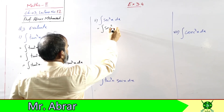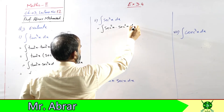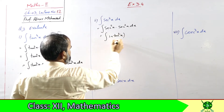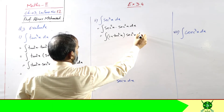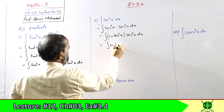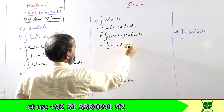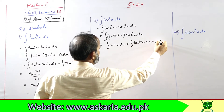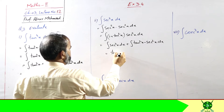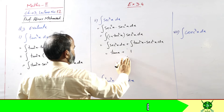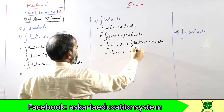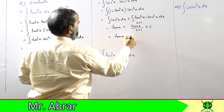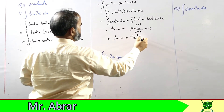अब sec⁴(x) का part है - इसको break कर रहा हूँ sec²(x) into sec²(x) dx। एक sec²(x) की जगह identity put कर रहा हूँ: 1 + tan²(x)। multiply करने पर sec²(x)·1 = sec²(x) आजाएगा और tan²(x) के साथ multiply होके। अब sec²(x) किसका derivative है - tan(x) का। और tan का derivative sec²(x) मौजूद है, तो tan की power में 1 add हो जाएगा। Final answer: tan(x) + sec³(x)/3 plus c।